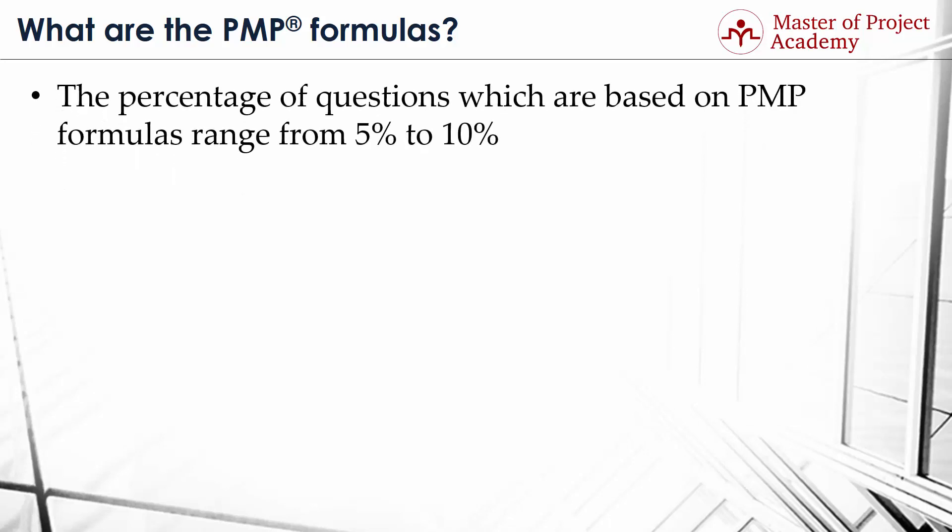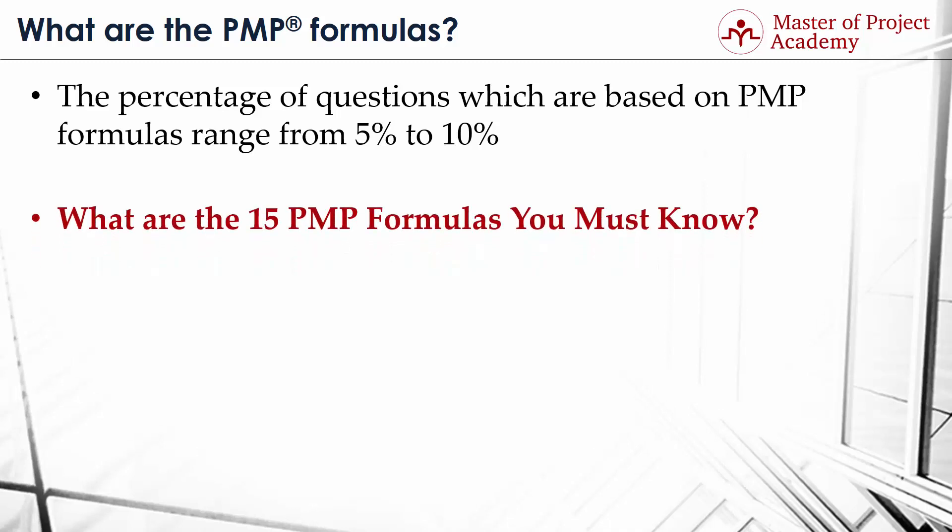The percentage of questions which are based on PMP formulas ranges from 5% to 10%. This means that there are around 10 to 20 questions, so it seems like a pretty small portion, right? Then you need to rethink your exam strategy. Although the number seems small, PMP formulas are quick wins, because PMP formula-based questions vary from direct to complex. So, what are the 15 PMP formulas you must know?